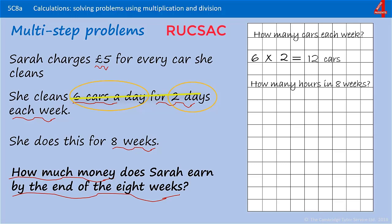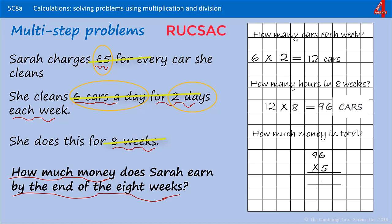Every week Sarah cleans 12 cars. Now we need to know how many cars that is in eight weeks — we know she cleans 12 cars a week, so we multiply 12 by eight, which is 96 cars. How much money does she earn in total? She cleaned 96 cars and charges five pounds for each car, so the calculation is 96 multiplied by five, which is 480. Sarah earns 480 pounds.